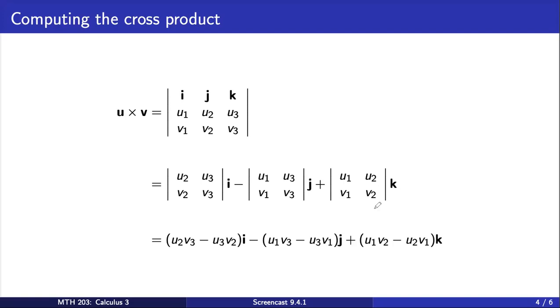To get the last term of this middle expression, we do the same thing with k. If we cross out the column and row containing k, we are left with a 2×2 matrix, which is multiplied by k on this next line. And we add this term to the previous two terms.